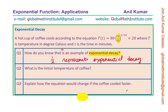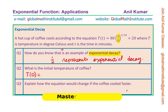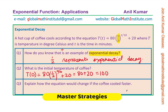Question number 2 is: what is the initial temperature of the coffee? To calculate the initial temperature, substitute 0 for the time t in minutes. We get 80 times one-half to the power of 0 over 10, plus 20. Anything to the power of 0 is 1, so we get 80 plus 20, which is 100 degrees Celsius. Do not forget to include the units for temperature in your answer.